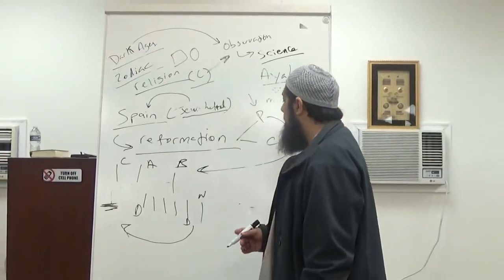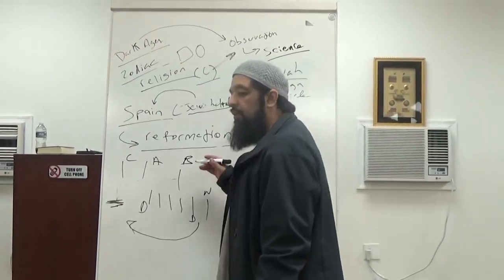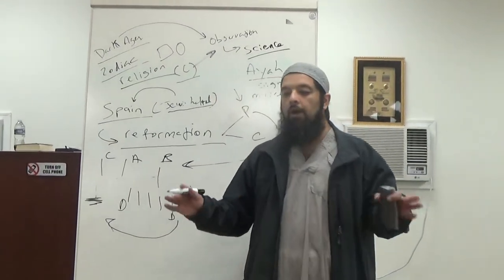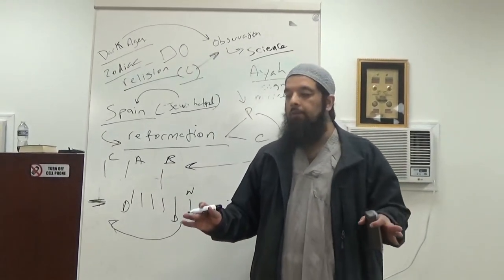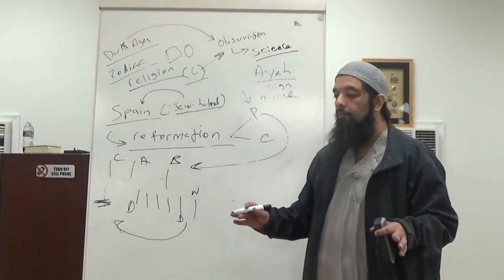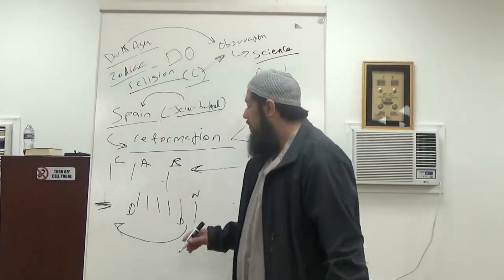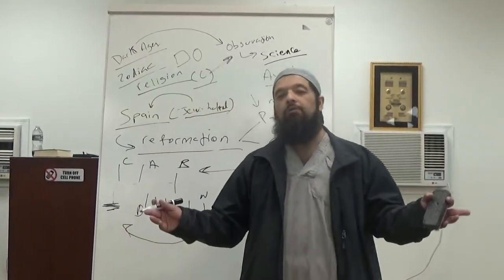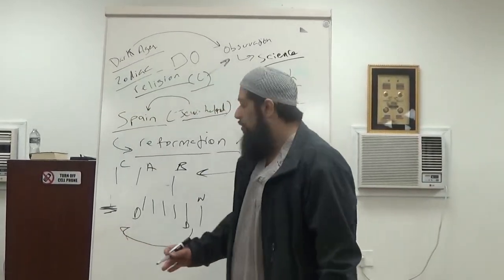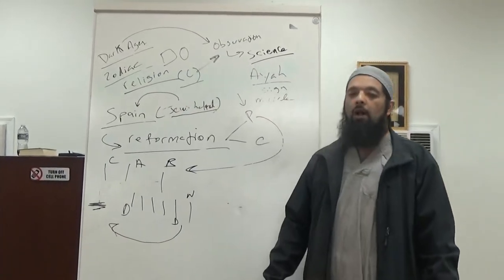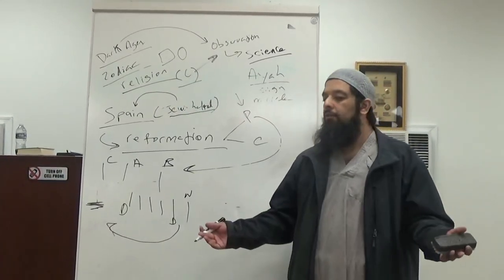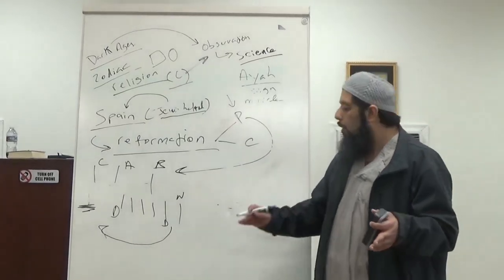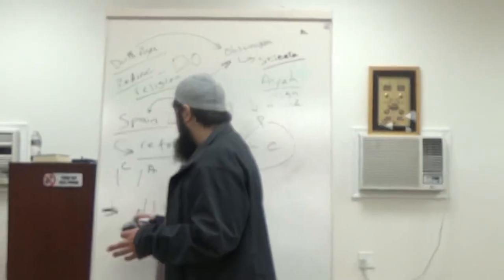And so what did they want to do? They needed to come up with a system of running the world that had nothing to do with God. Why? But as you start with Descartes, who says there's a God, but the world runs as a machine and basically God's not really involved, to David Hume, who says, well, if there's a God, what does it matter to us?